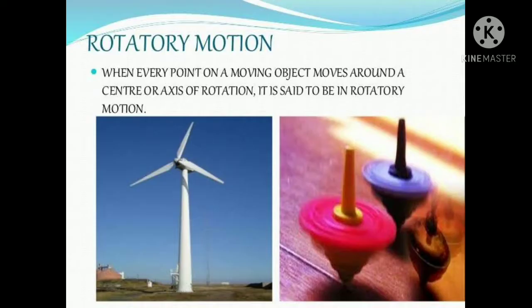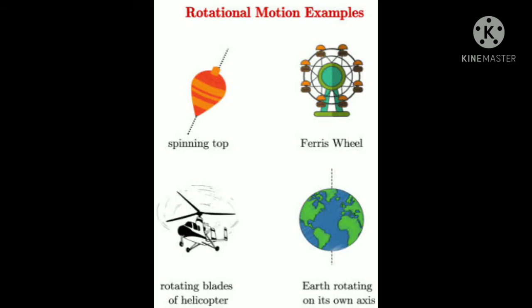Examples of rotatory motion include the motion of a wheel about its axis and a steering wheel. This is also known as circular motion. When every point on a moving object moves around the center or axis of rotation, it is rotatory motion. Examples: spinning top, windmill, ferris wheel — which we have seen in fairs — and the rotating blades of a helicopter.